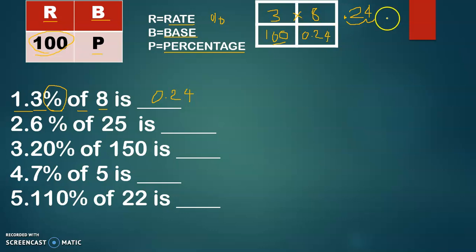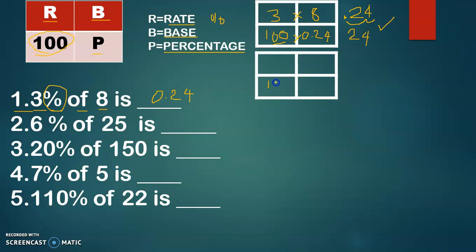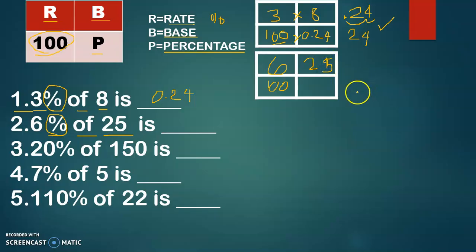To check your answer using the Cabinio Square, multiply the numbers paired below: 100 multiplied by 0.24 equals 24. The products should be equal — the product of the rate and the base, and the product of 100 and the percentage. If they are equal, you are sure your answer is correct. Now let's solve number 2. In the Cabinio Square, 100 is always constant. The rate is the number with the percent sign, so the rate is 6. After the word 'of', that is the base, so the base is 25.